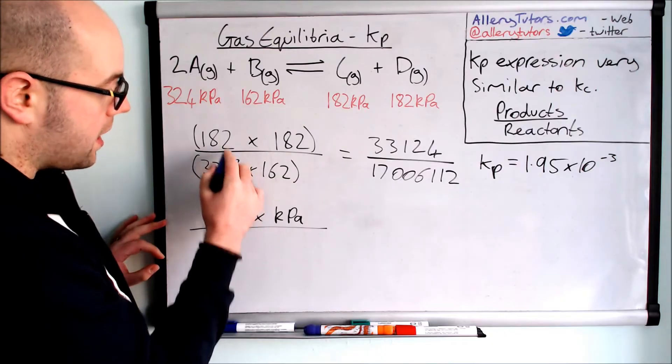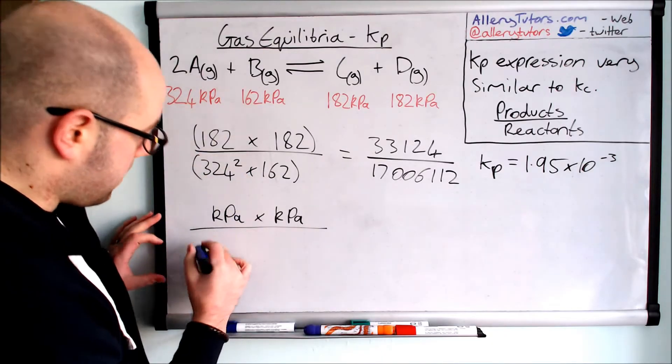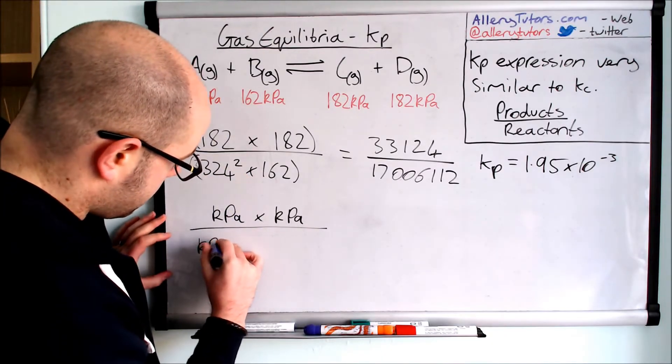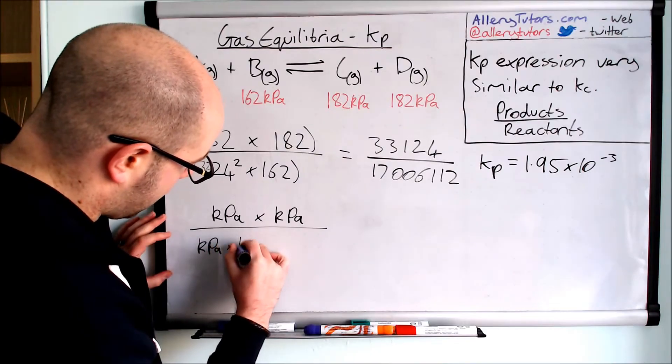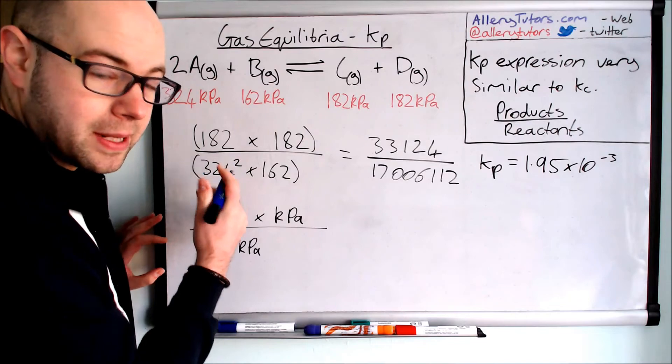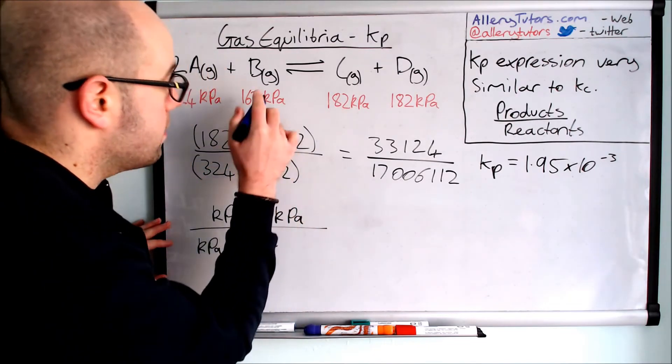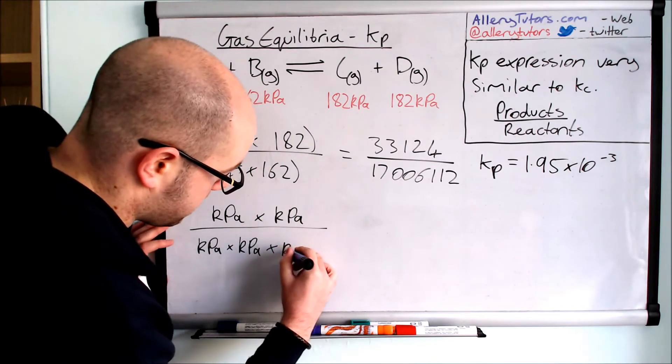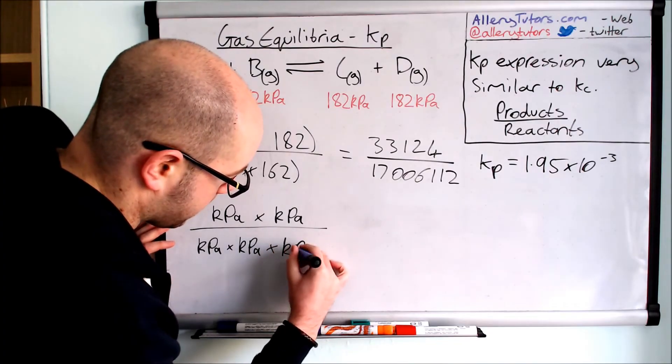Now because we've got a squared number here because of the two moles of A, then we have to write the units twice. So it's KPa times by KPa because the square number tells us that we have two lots of the kilopascals. And then we've got this one here which is B and that's just going to be kilopascals as well. So they're all kilopascals.